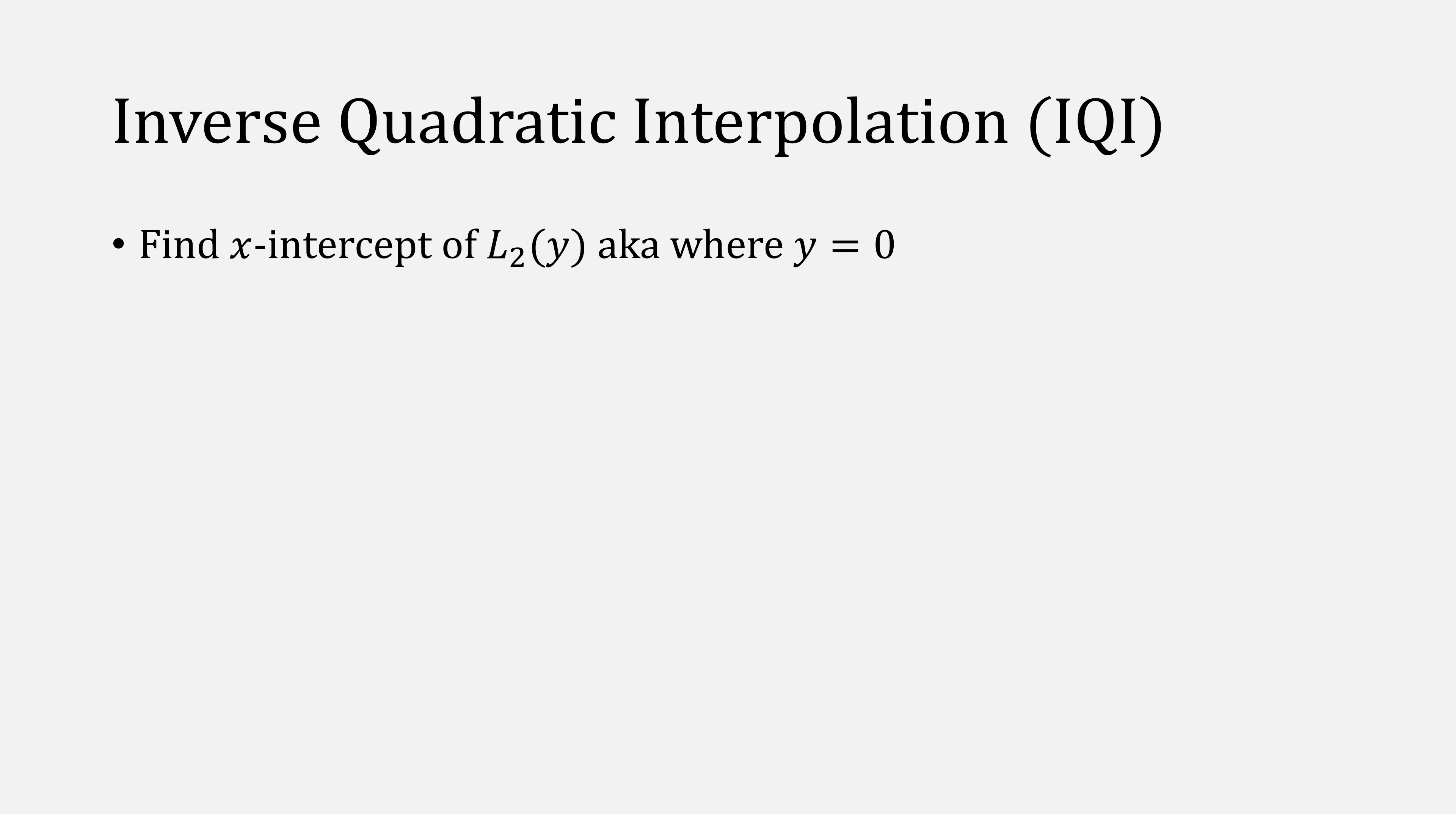But how do we find this point? Given our Lagrange polynomial, we want to find the x-intercept, which means we want to find where y is equal to zero. So we'll take our Lagrange polynomial and simply plug in zero. This gives us our x-intercept of one-third. Then we compute a new Lagrange polynomial and repeat the process until the function at that new point is less than some epsilon in absolute value. And we can also simplify our equations so we don't have to come up with a new Lagrange polynomial every time.